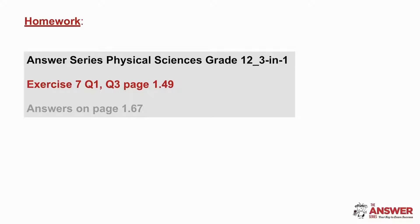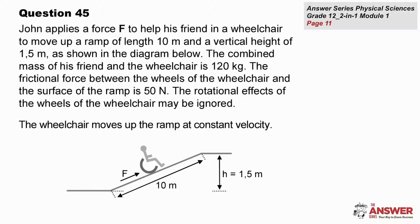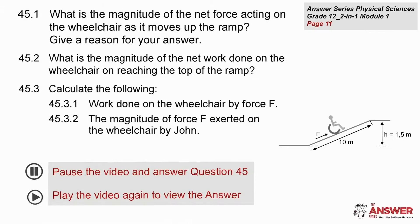It's now your turn to try these kinds of calculations. If you have the 3-in-1 study guide, you can try questions 1 and 3 on page 149, with the answers on page 167. From the 2-in-1 study guide, question 45 is on page 11. Here we have a wheelchair moving up a ramp at constant velocity. Pause the video and try the questions for yourself, then play the video again to compare your answers.